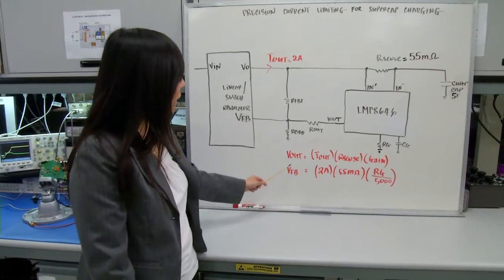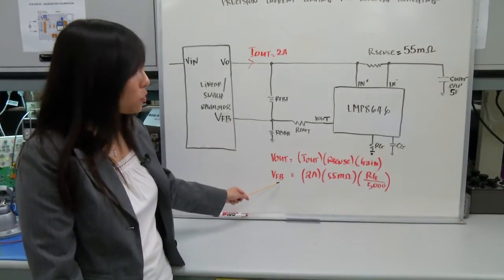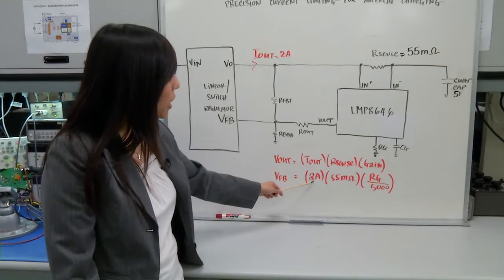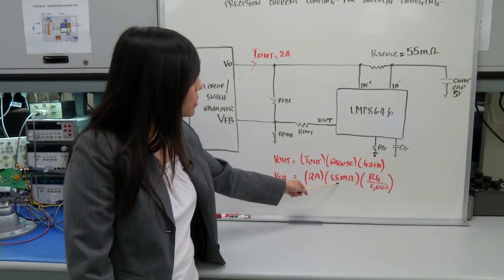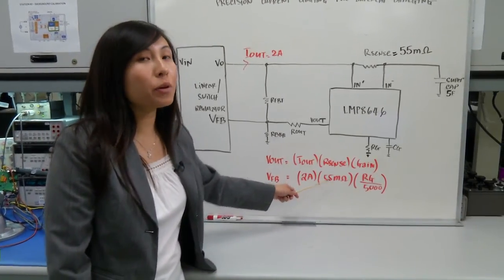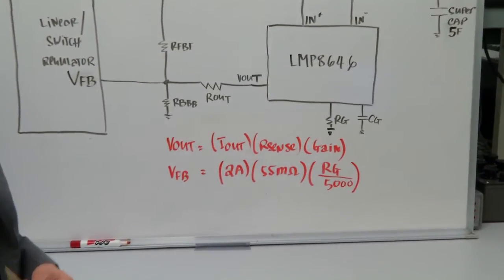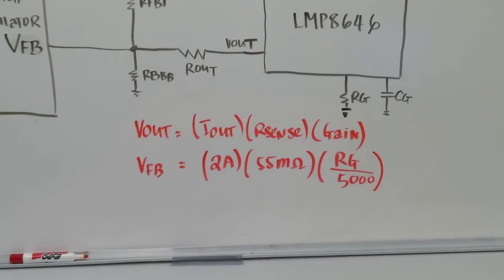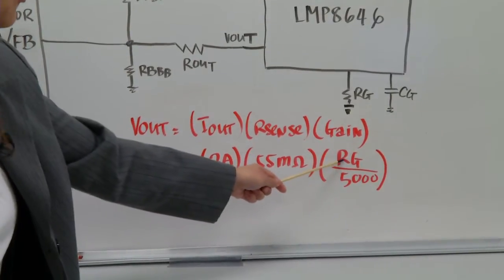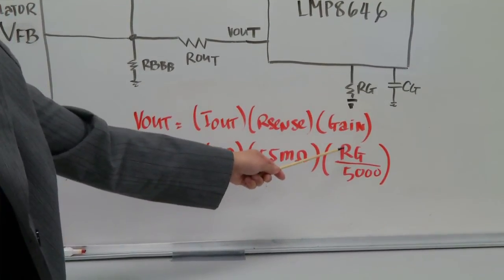So if you know that feedback pin is 0.8 volts and you know your Iout of 2 amps and your Rsense of 55 milliohms. And typically we want to choose an Rsense in the milliohm range so you don't have a huge voltage drop across your load line. You can use this equation to calculate for the gain resistor Rg.